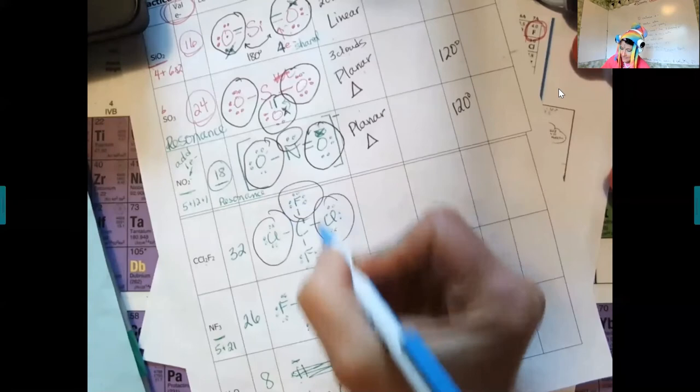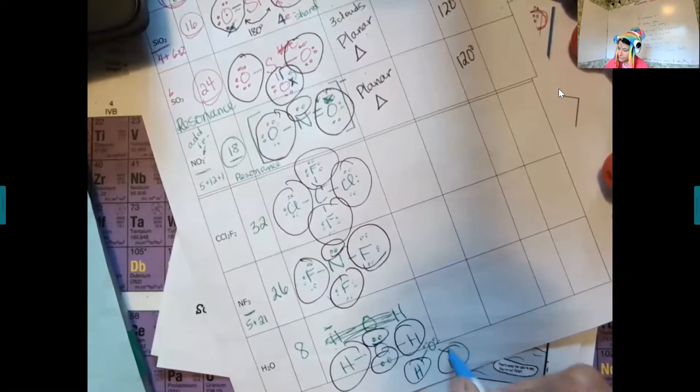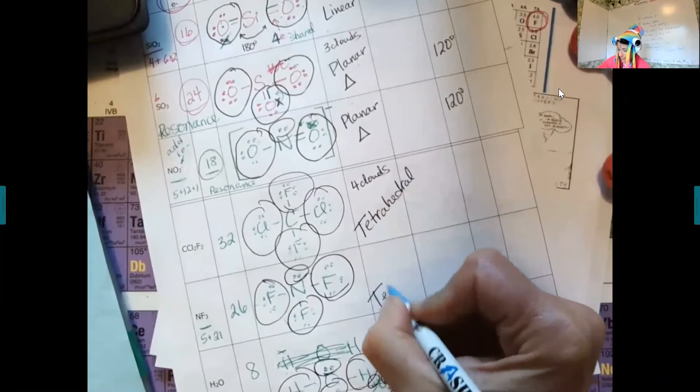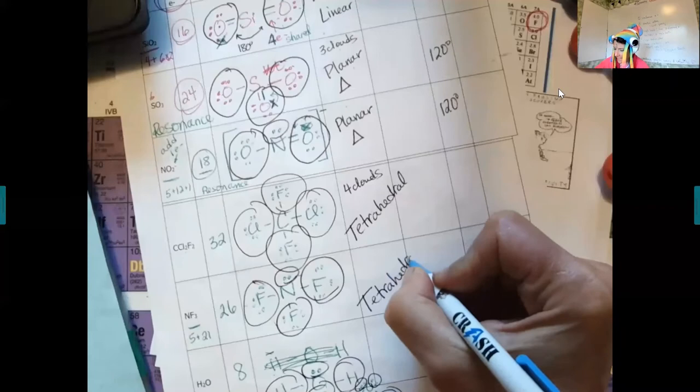These three down here all have four clouds: four atoms, three atoms plus a lone pair, or two atoms and two lone pairs. Any way you draw water you have two hydrogens and two lone pairs — four clouds. Four clouds is what all of these have, and that is a tetrahedral or tetrahedron. Tetra means four. Tetrahedral is an adjective; tetrahedron is a noun.